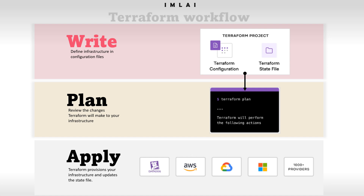By and large, setting this up requires a lot of manual work. But with Terraform, you write a configuration file defining all these activities — deploying an application in a virtual machine inside a VPC with a specific security group using a load balancer. Once you apply that configuration file, everything is done automatically and your application will be running and accessible. So the Write stage is simply: define your infrastructure in configuration files.